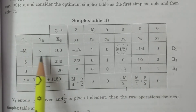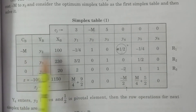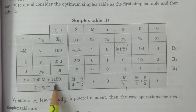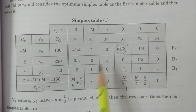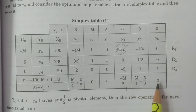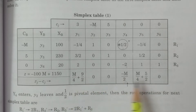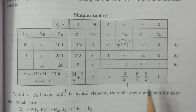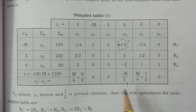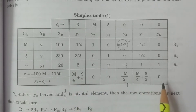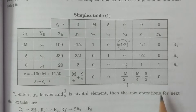Z should have minus M into 100, that is minus 100M, plus 5 into 230 plus 0 into 20, giving 1150. Using the CB XB formula, we calculate zj minus cj values. As usual simplex procedure, we apply. We have a negative value in the net evaluation; as usual, the calculation gives a negative value, and the algorithm checks if it equals 0.